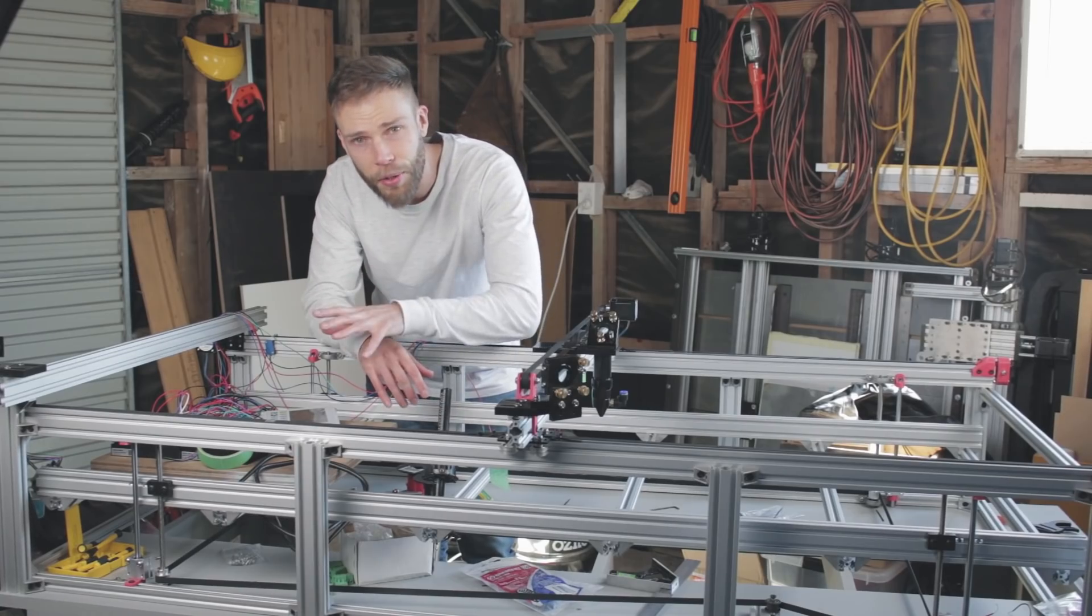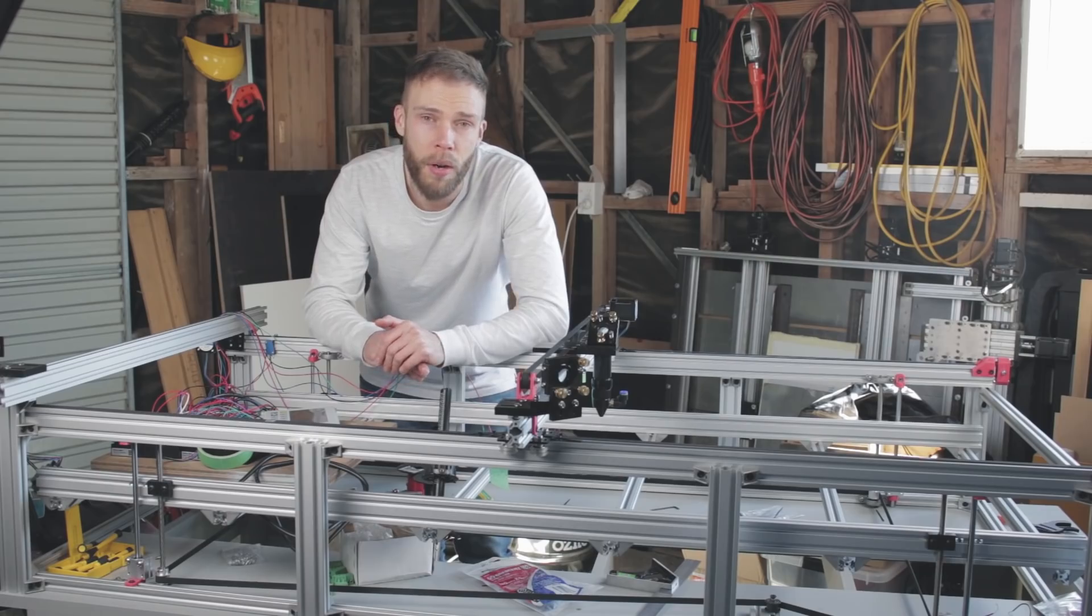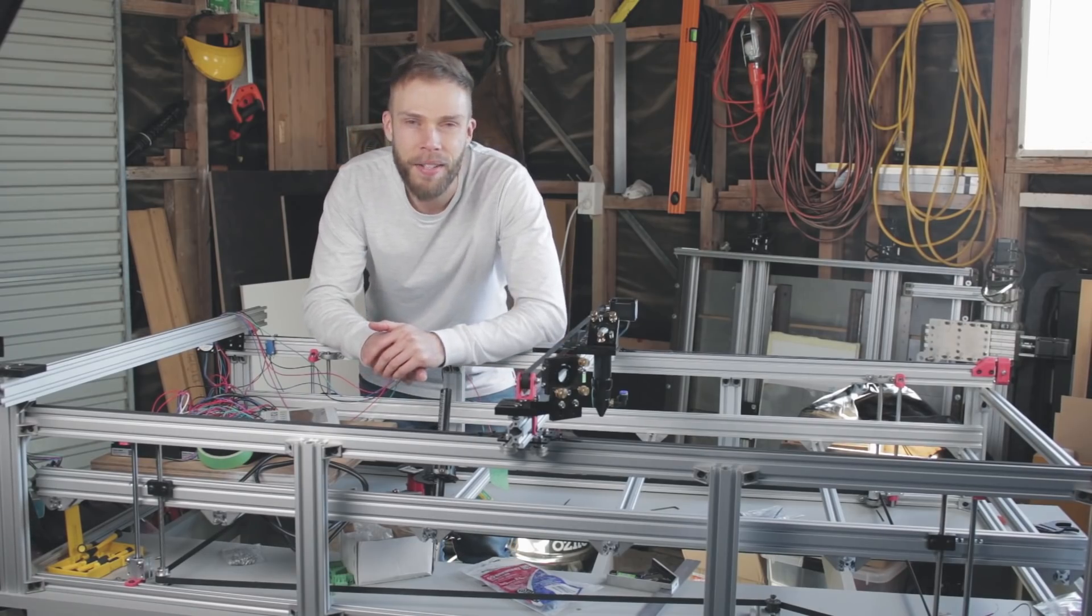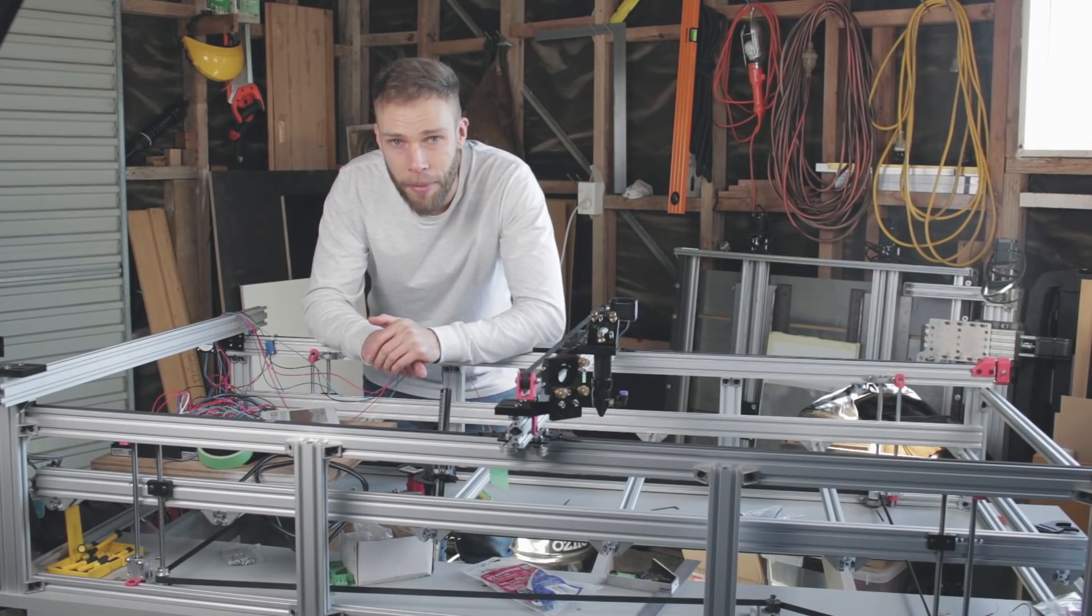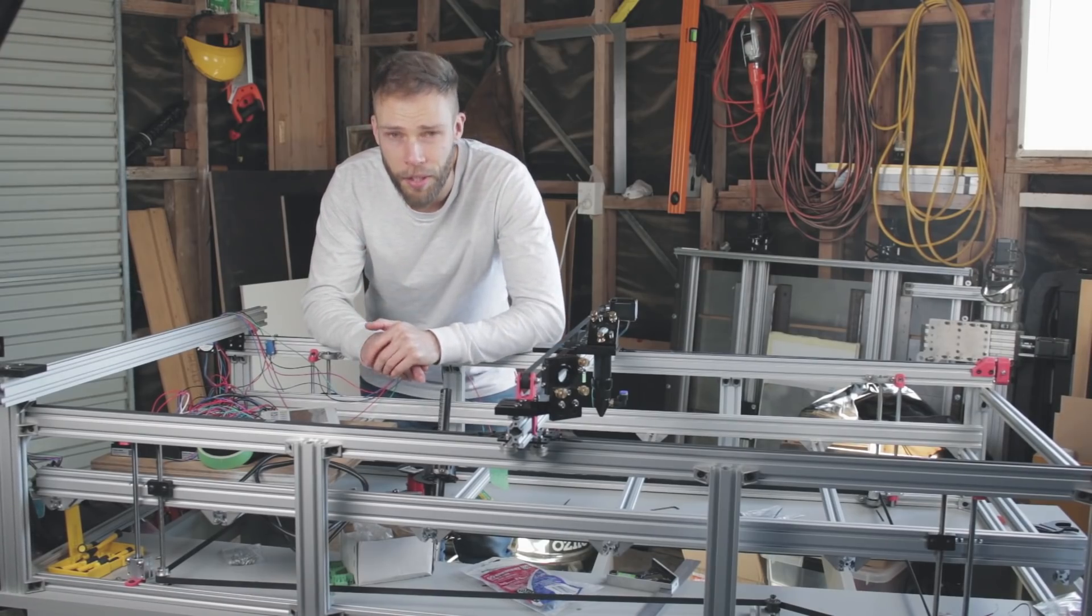Now last time we got started on the electronics and I got the movement side of things sorted out. Today I want to get going on the laser side of things. But before I can connect the laser tube to the power supply and shoot laser beams across the garage, there's two systems I need to get in place first, and that's the water cooling and the air assist. So let's crack into those first.